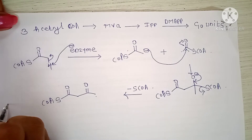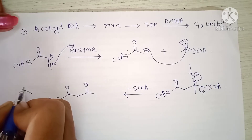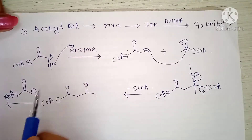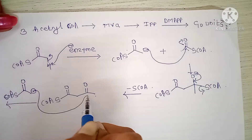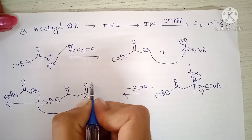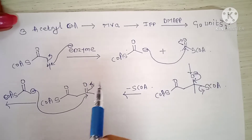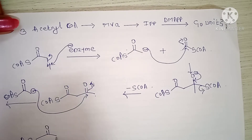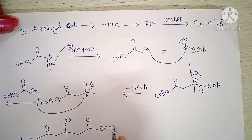In the next step, another molecule of acetyl coenzyme A is added. S-CoA, CH2 negative charge attacks the electron-deficient carbonyl carbon, forming O minus. The bond then shifts, giving S-CoA–C(=O)–CH2–O⁻–CH3–CH2–C(=O)–S-CoA.